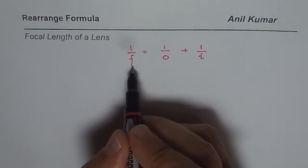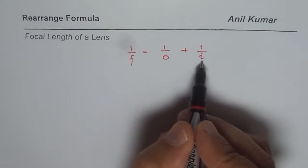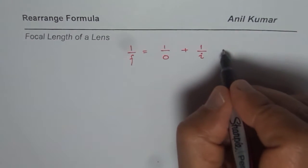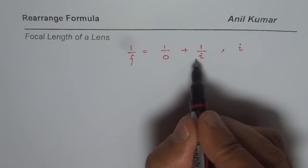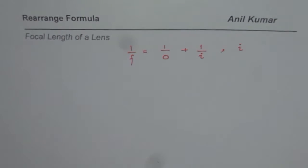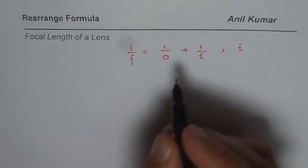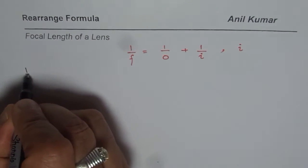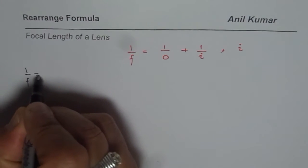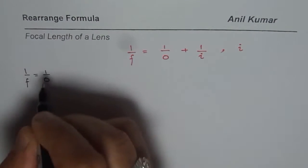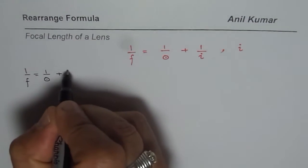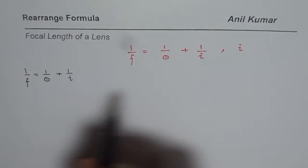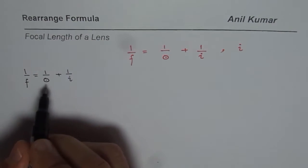The idea is how to find these variables individually — that is to say, how to isolate I, for example, how to isolate the image distance from this formula. That requires some skills of working with fractions. Let us rewrite this formula: 1 over f equals 1 over O plus 1 over I.